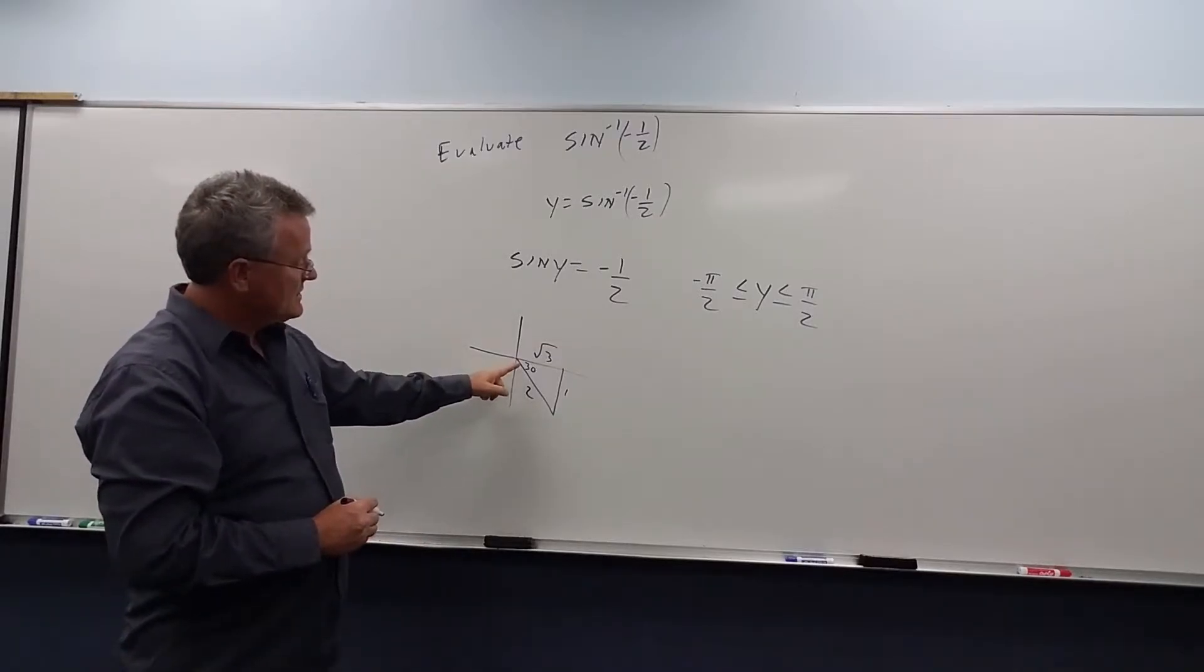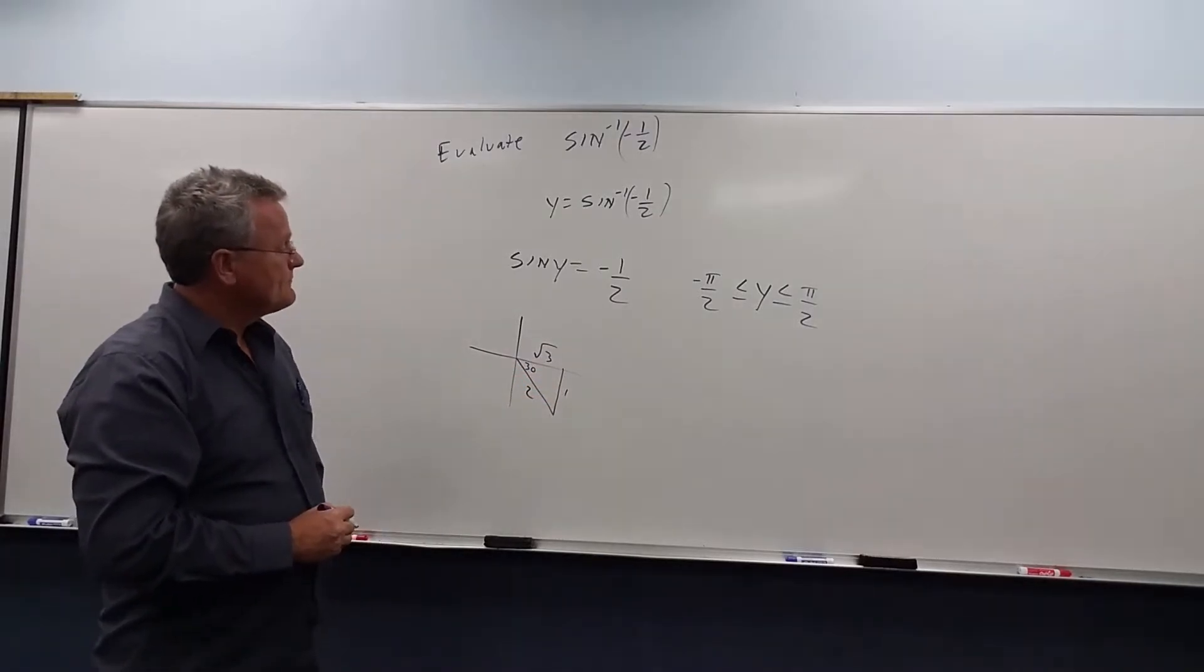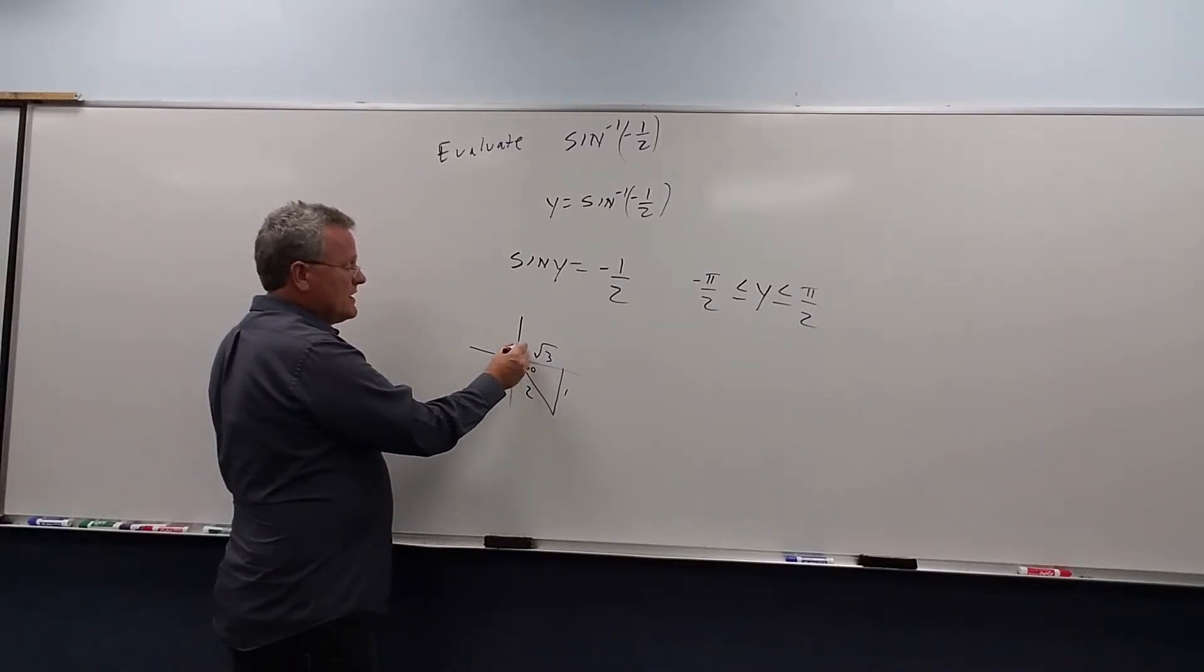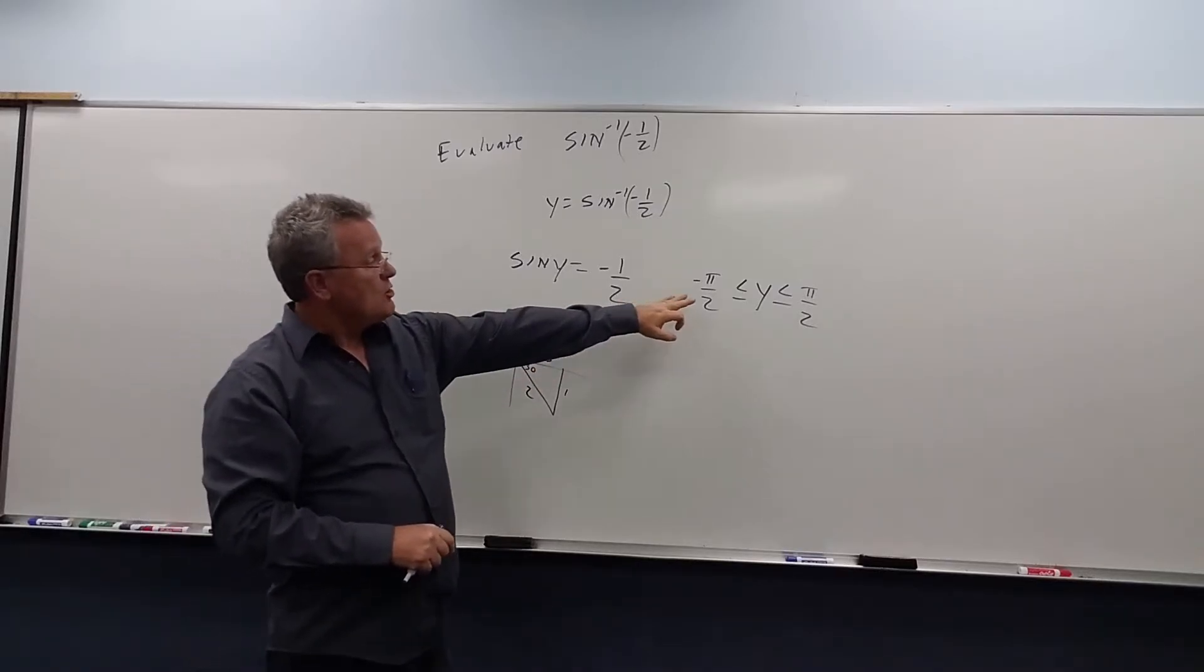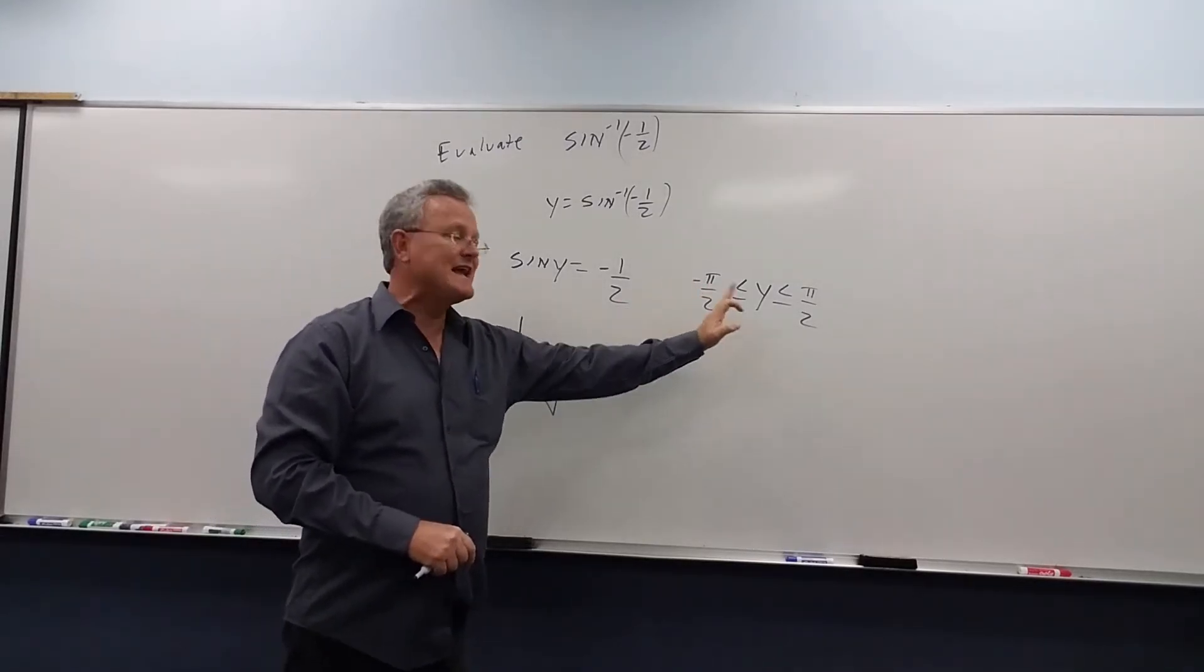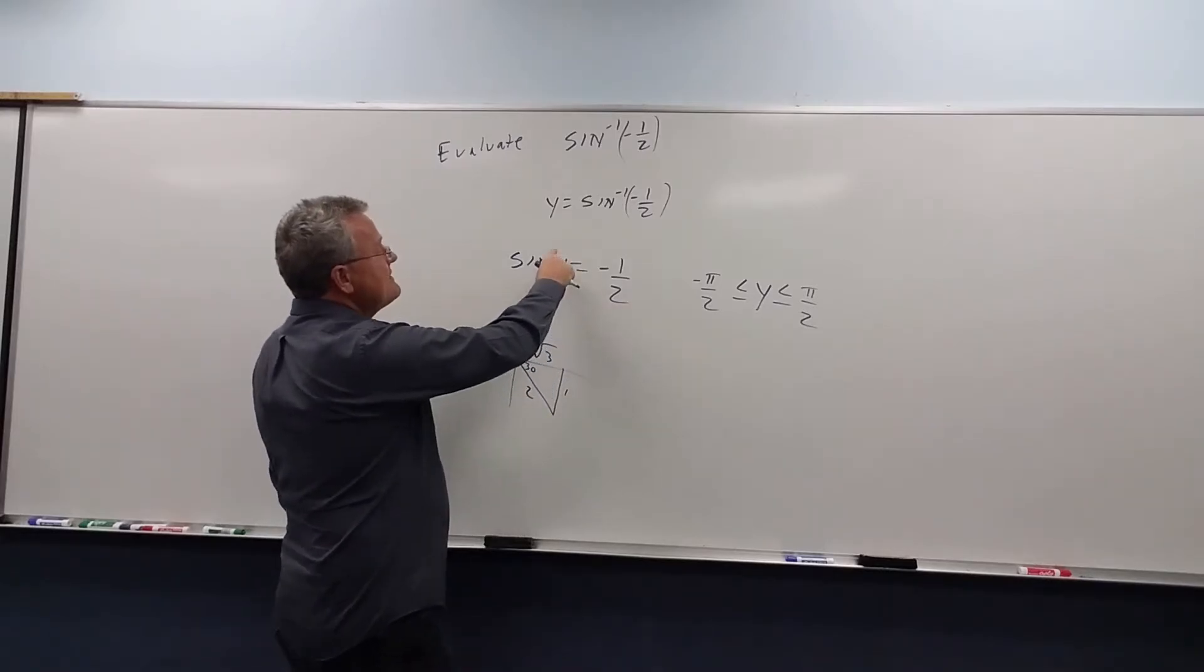And we know this angle has to be 30 degrees, because that's the angle opposite 1. Alright, so the actual angle... no, the angle here is 330, but we want our angle to be between negative 90 and 90.